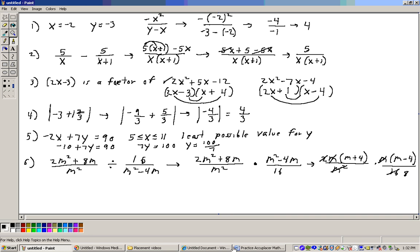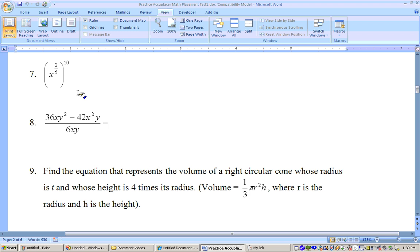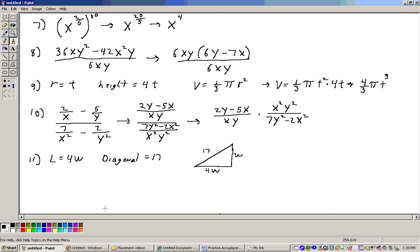Problem 7 here. Problem 7 says x to the 2 fifths raised to the 10th. Let's go ahead and do these problems here. So x to the 2 fifths raised to the 10th. When I have exponents raised to exponents I multiply. 2 times 10 is 20, so it would be 20 fifths. And 20 divided by 5 is 4, so the answer is x to the 4th.